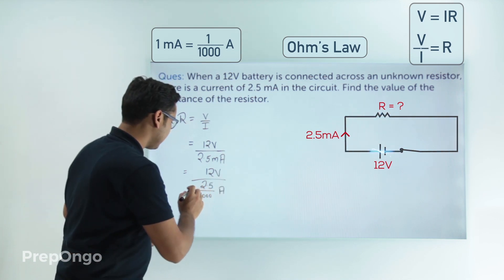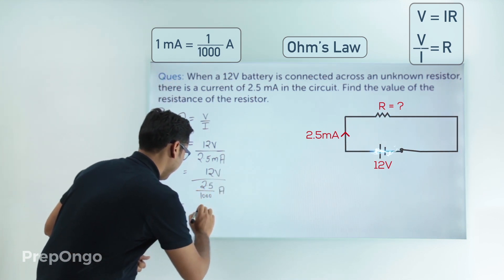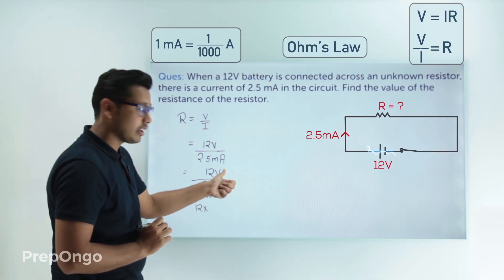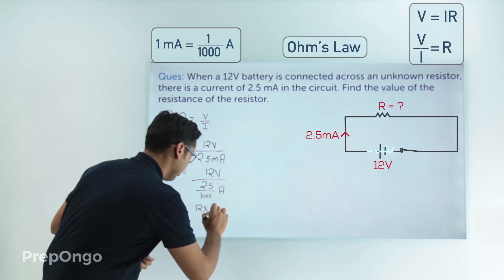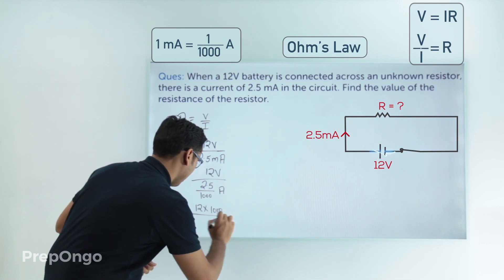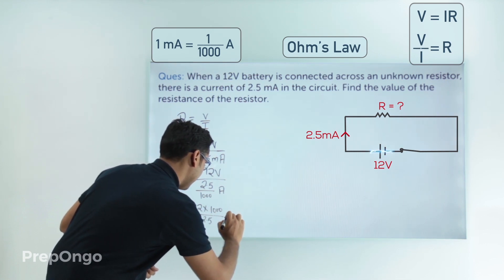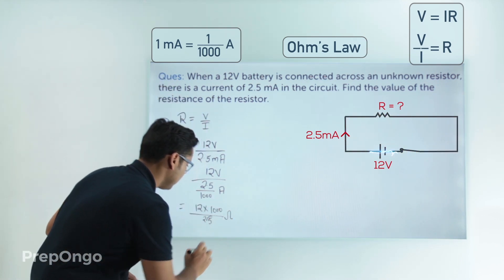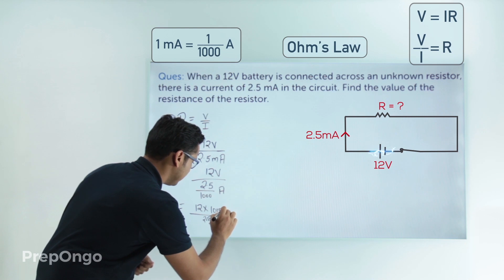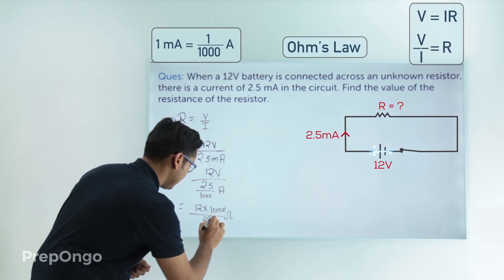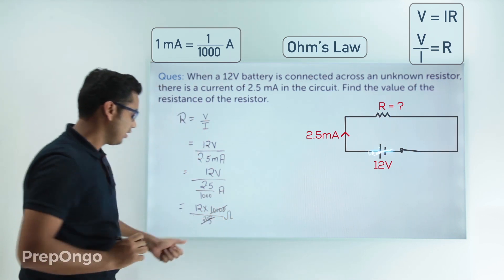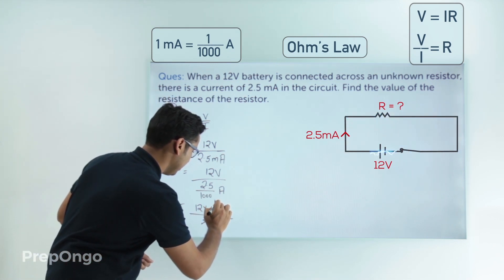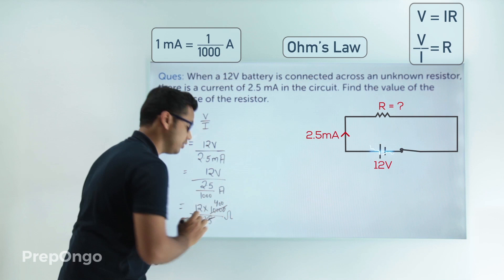Let's calculate it. We can write this as 12 into... this will go in the numerator, 12 into 1000 whole upon 2.5, and this value will be in ohms. Now just solve this. This will go and when 0 will increase, and if we cut it then this will be 25 goes into 100.